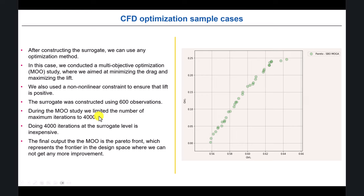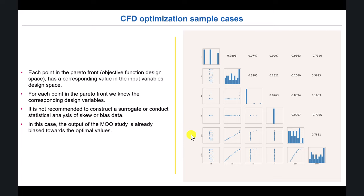We'll also show multi-objective optimization. The goal is to construct a Pareto front representing the set of best solutions — here you don't have a single solution but a combination. For example, minimizing drag and maximizing lift yields different combinations, and you pick the best one, possibly cross-relating to another variable like volume. Important: never use data from optimization runs to build surrogate models, because that data is biased toward the optimization direction.